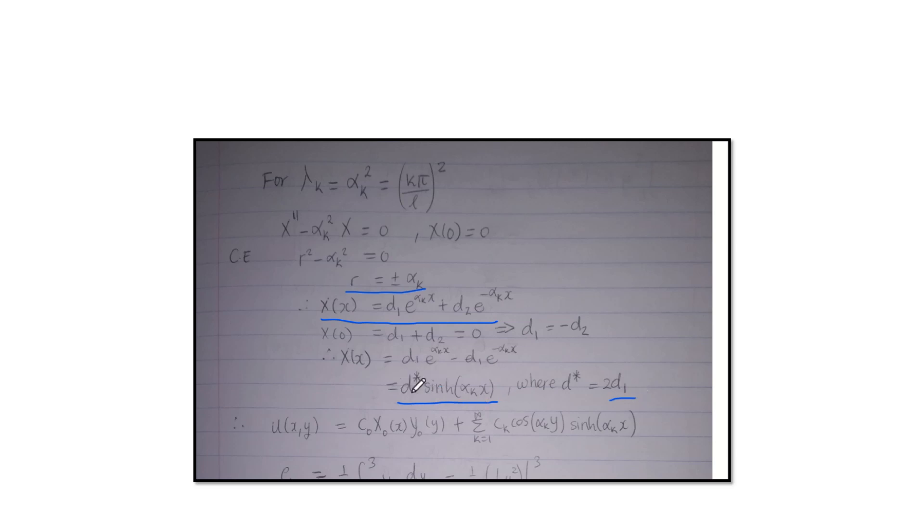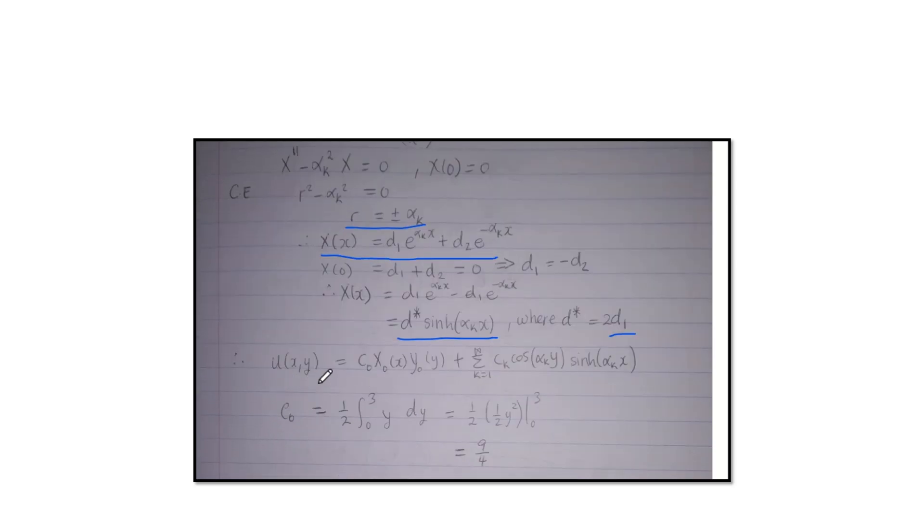You could have wrote two D1 here, is still correct. But then to just put one constant, just gonna replace two D1 to the D star. So now with that solved, that means we now know that our u of x, y is of this form. So it's C0 X0 Y0 and then plus that part.